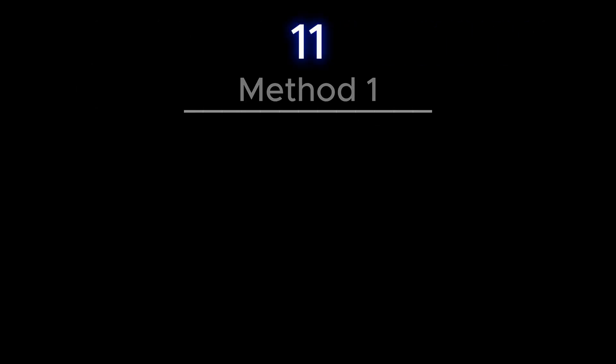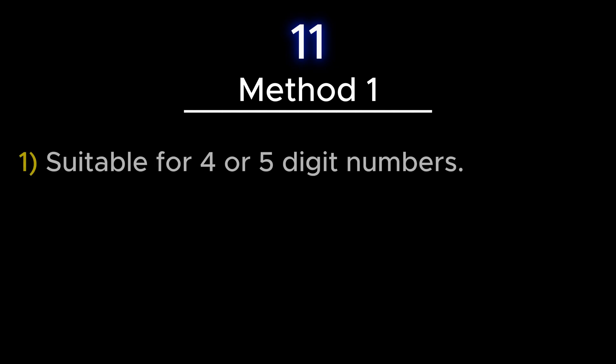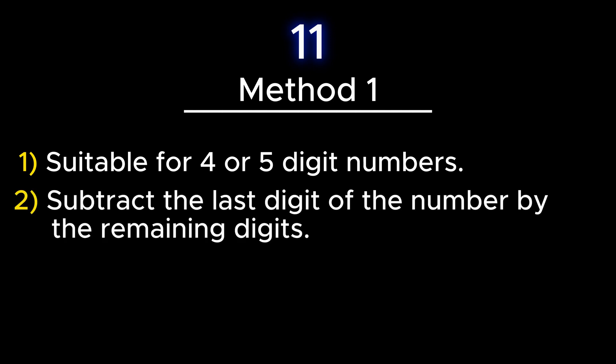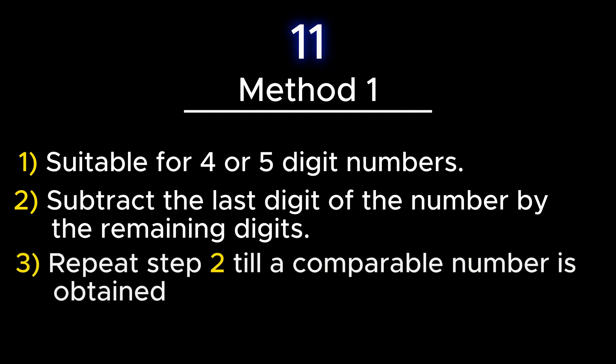There are two methods to test divisibility for number 11. The first test is suitable for small numbers, that is a 4-digit or 5-digit number. As per the test, the last digit of the given number is subtracted from the remaining digits. This process of subtraction is repeated till a comparable number is obtained.